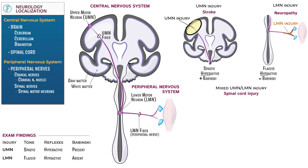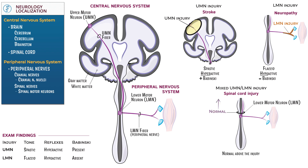Now let's show a mixed upper and lower motor neuron pattern of injury, such as direct injury to the spinal cord. Areas of the body innervated by structures above the level of the lesion will be normal. Below the level of the lesion, there is an upper motor neuron pattern of injury because the white matter tracts — upper motor neuron fibers — are disconnected from their neurons, including descending tracts from the cerebral cortex innervating levels below the lesion. At the level of the lesion, there will be a lower motor neuron pattern of injury because the spinal motor neuron itself is affected, resulting in absent muscle stretch reflexes at that level.